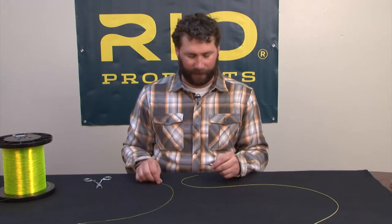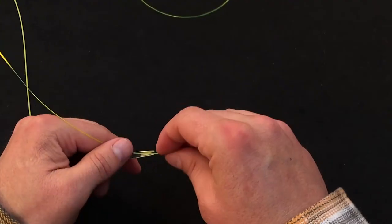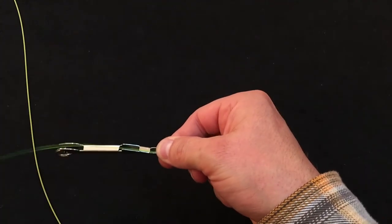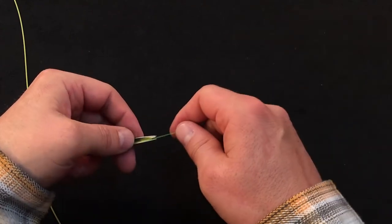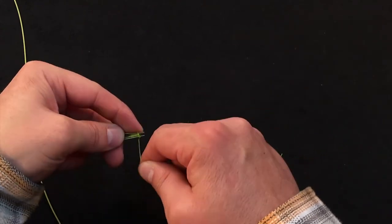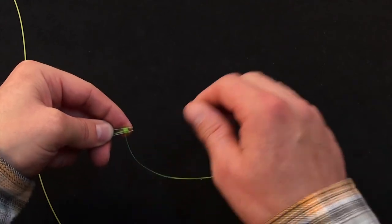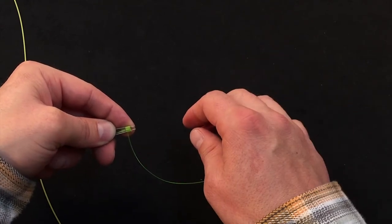To use this TyFast tool, you simply lay your leader in the gutter of the tool. Then we'll take and wrap four, maybe five loops around the TyFast tool.